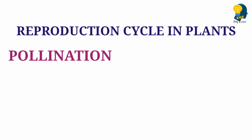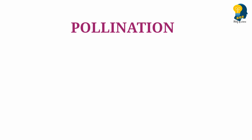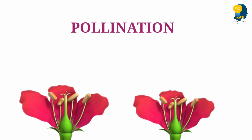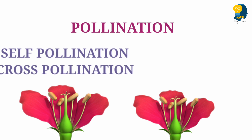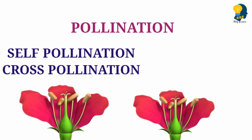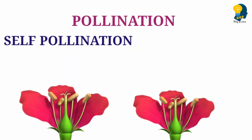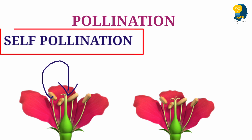The pollen reaches the stigma in two different ways. The two different ways are: one is self-pollination and another one is cross-pollination. When I say self-pollination, the pollen grains present in the anther of a flower will move to the stigma of the same flower. We call this type of pollination self-pollination because the transfer of pollen grains is seen within the same flower.